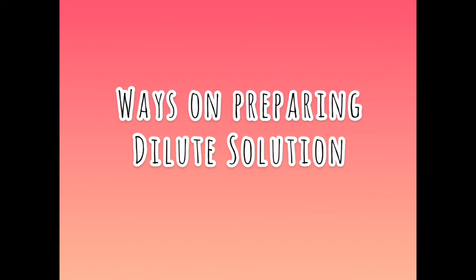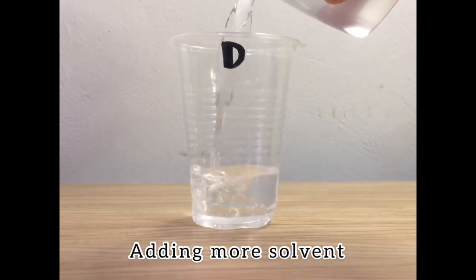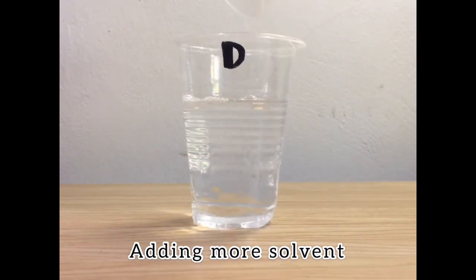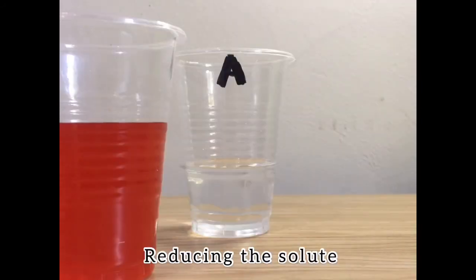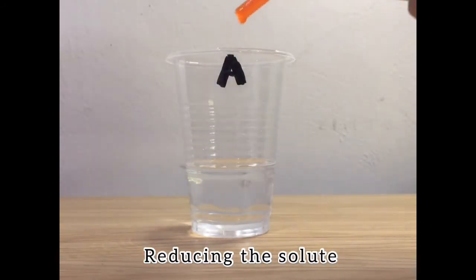There are ways on preparing a dilute solution. First is by adding more solvent on a solution, or can be by reducing the amount of solute in a solution.